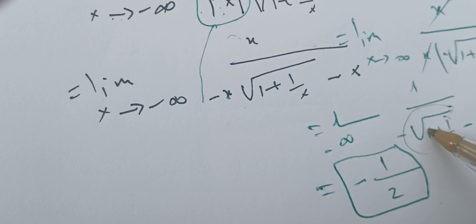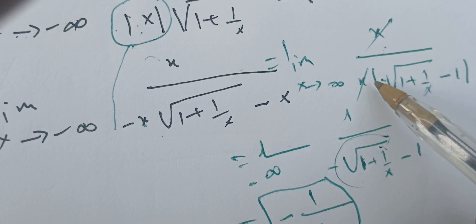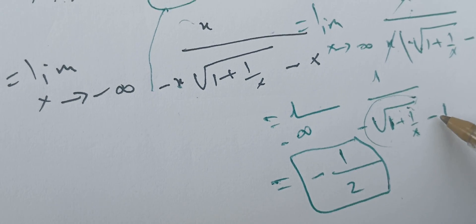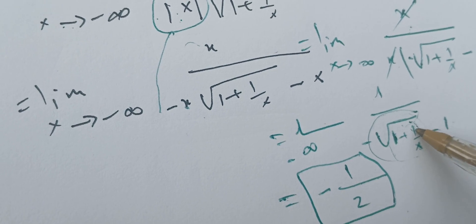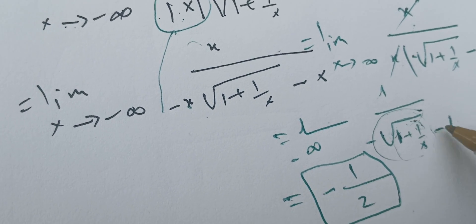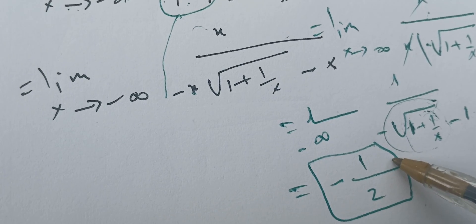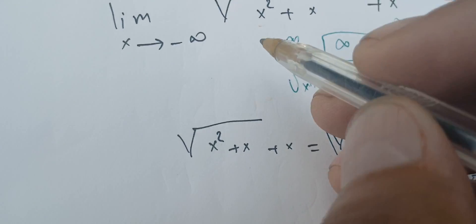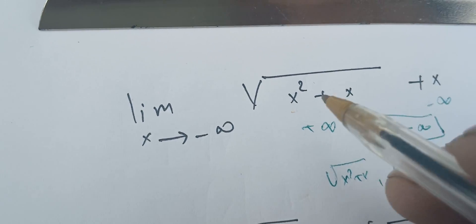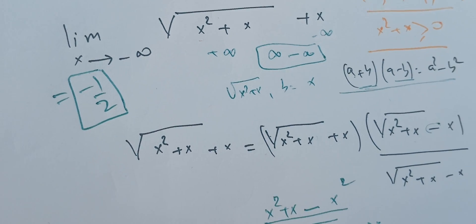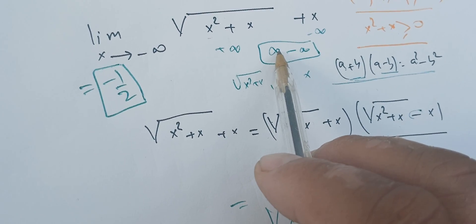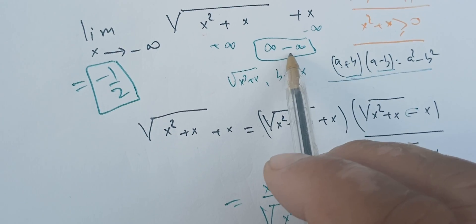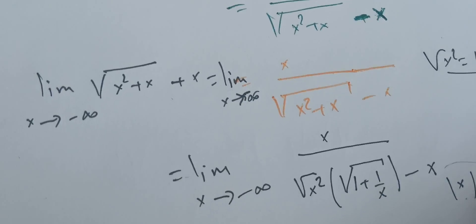So after canceling x, we're left with one over minus square root of one plus one over x, minus one. Entering the limit, we get the square root of one, which is one, giving minus one minus one, which equals minus two in the denominator. So the limit is one over minus two, which is minus one half. We had to do many steps to find this limit, and the difficulty came from the plus infinity minus infinity indeterminate form. If you see any errors or mistakes, please let me know — thank you.